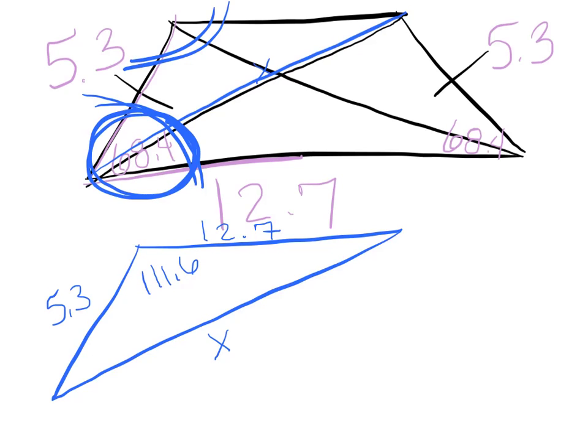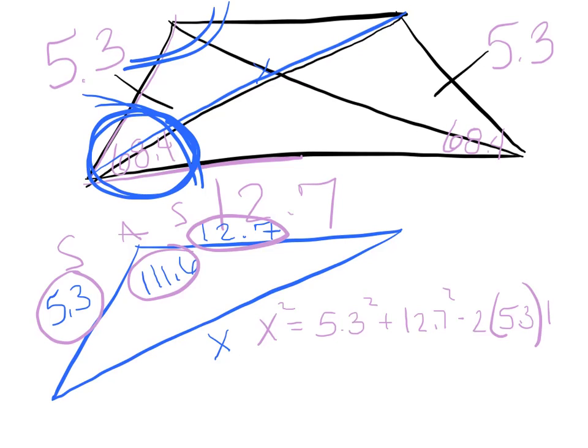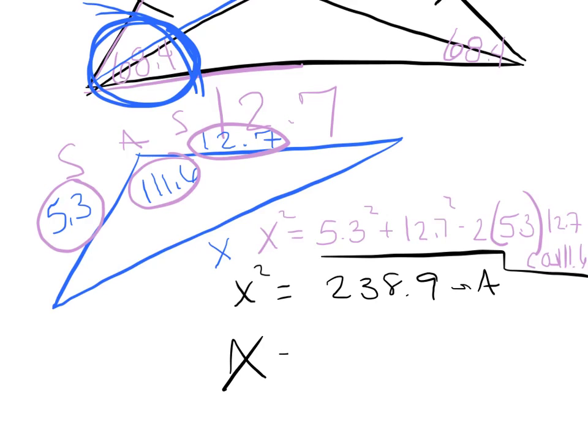And now, just say to yourself, I have side, the angle next to it, and the next side. Side angle sides is law of cosines, and there we go. So, I'm going to set it up as x squared equals my two sides. 12.7. I'm going to squeeze that on the end. Cosine of 111.6. All of this junk is on one side of the equal sign. So, just type all of that in your calculator and see if you get the same thing. So, pause it. Try it on your own. I've got x squared equals 238.9. Stored that into alpha a. Square root of my alpha a. And I've got my x equals 15.5 to the nearest tenth.